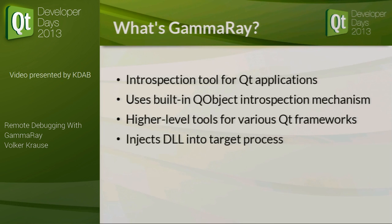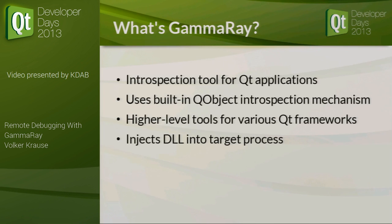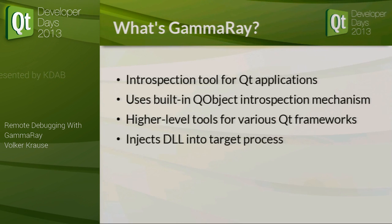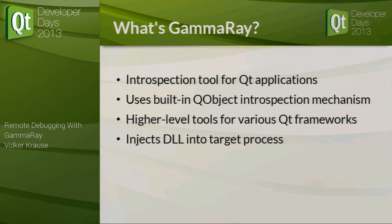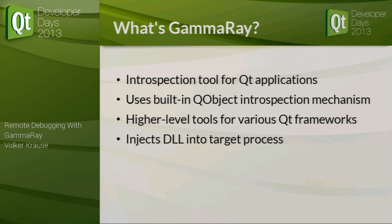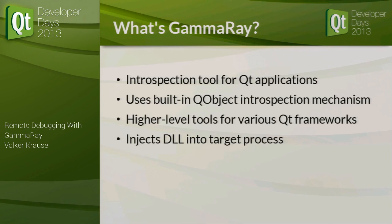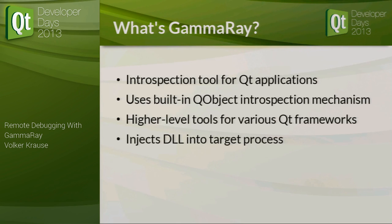GammaRay is an introspection tool for Qt. That means you can attach to an arbitrary Qt application — no modifications necessary whatsoever, like with a regular debugger — and look at the QObject hierarchy you have in there.